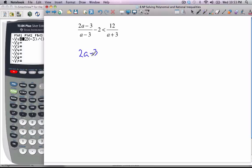So I have 2a minus 3 over a minus 3, minus 2. I'm going to bring this over to the left-hand side, so minus 12 over a plus 3, and I want that to be a negative.